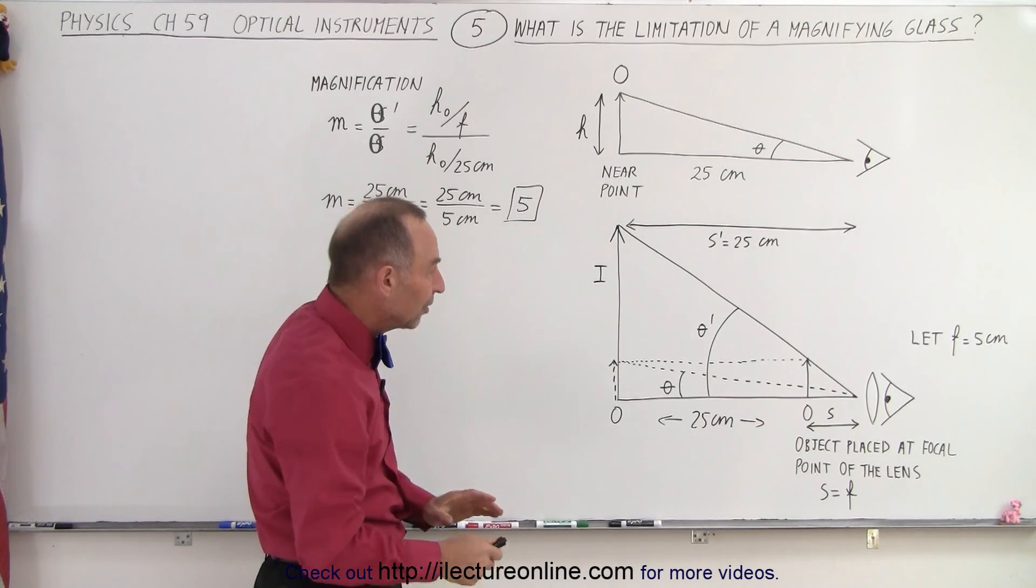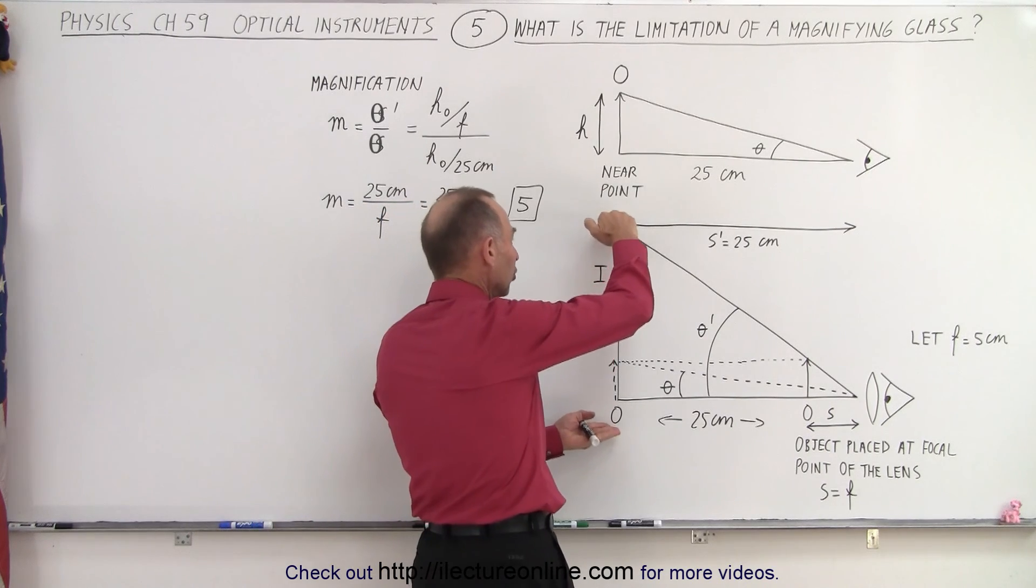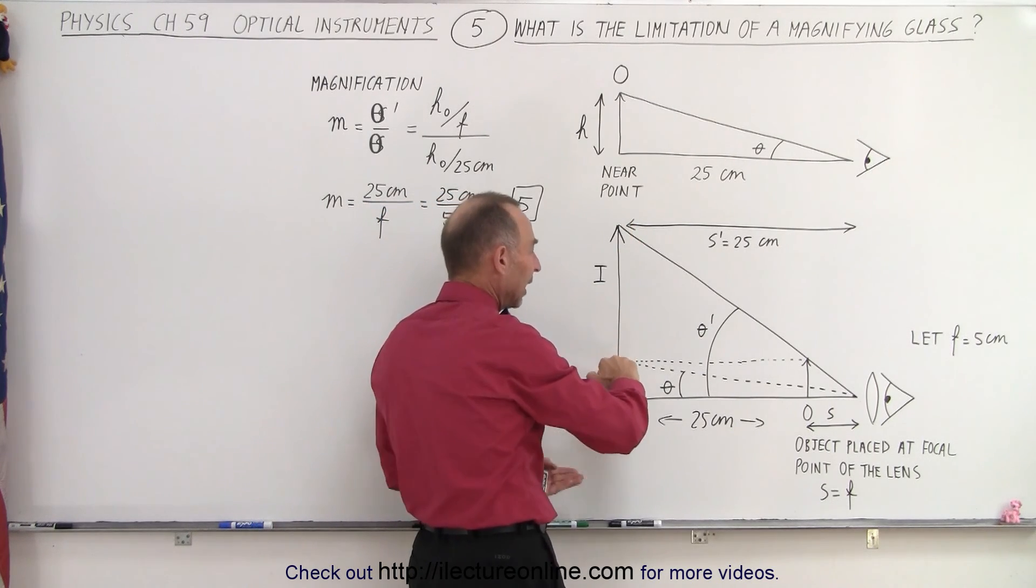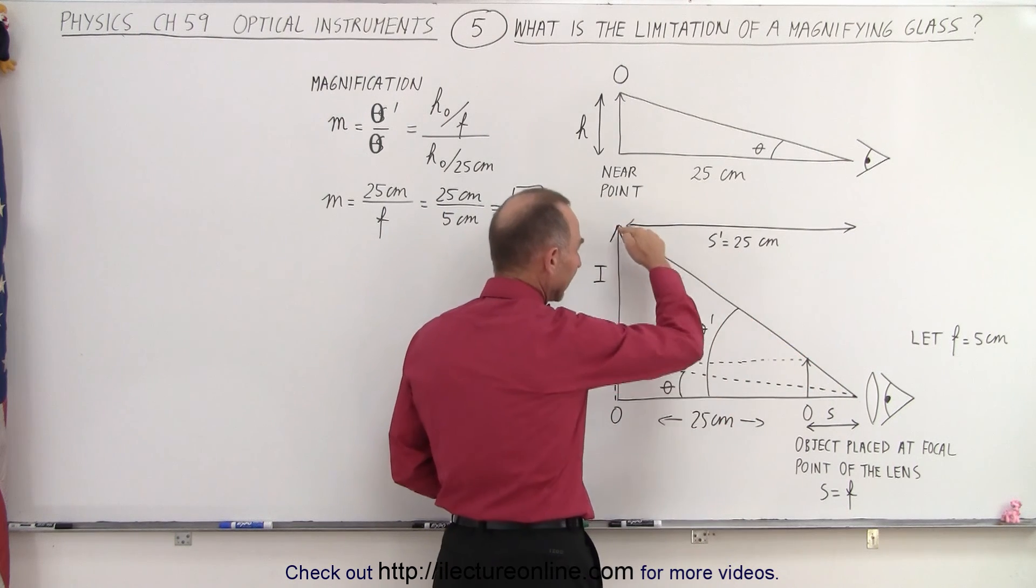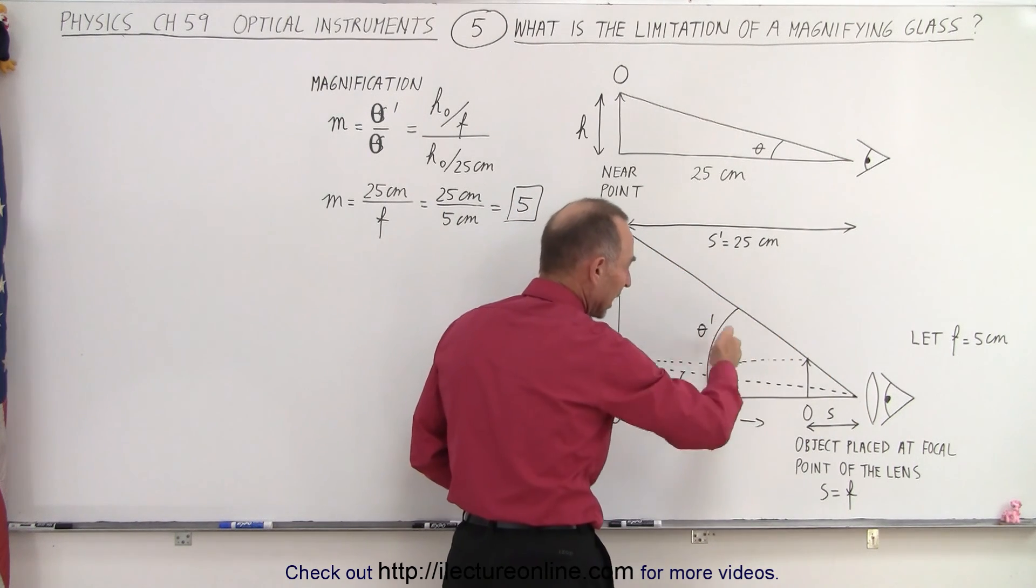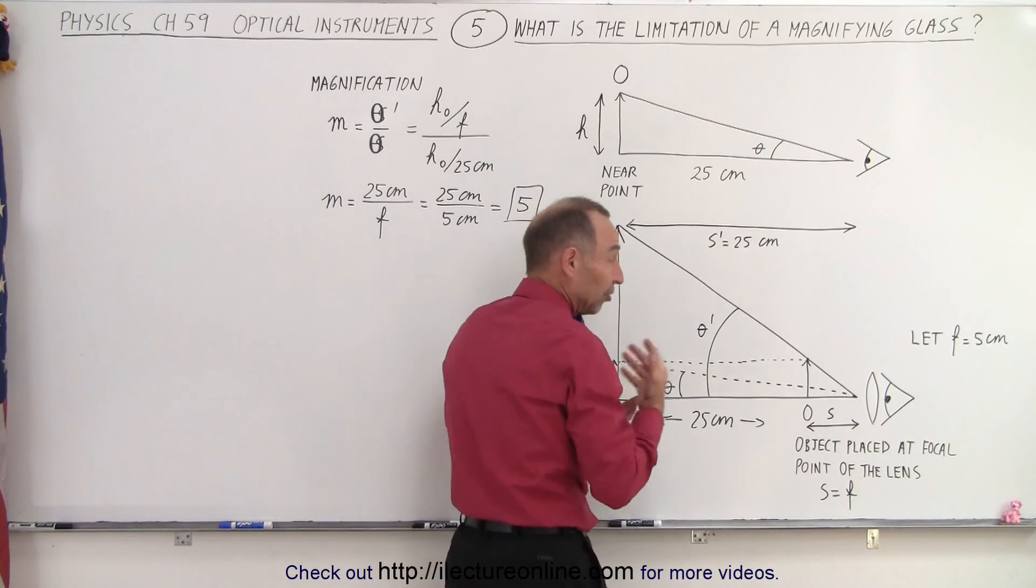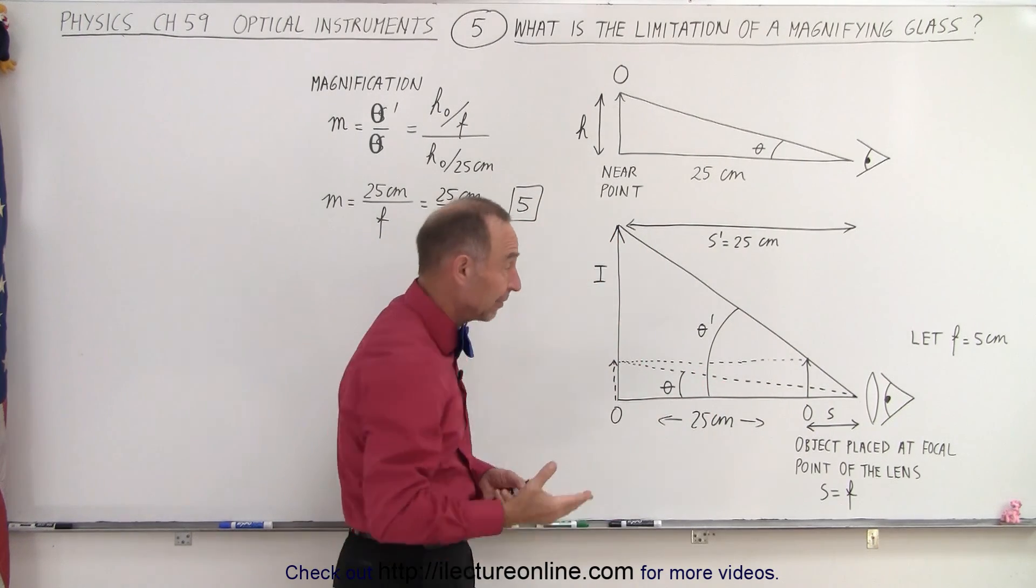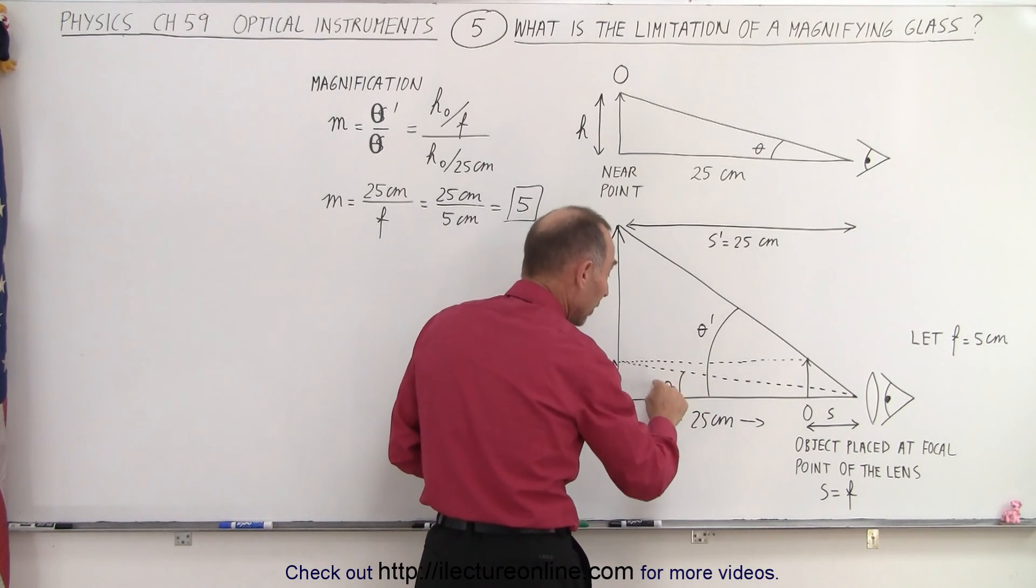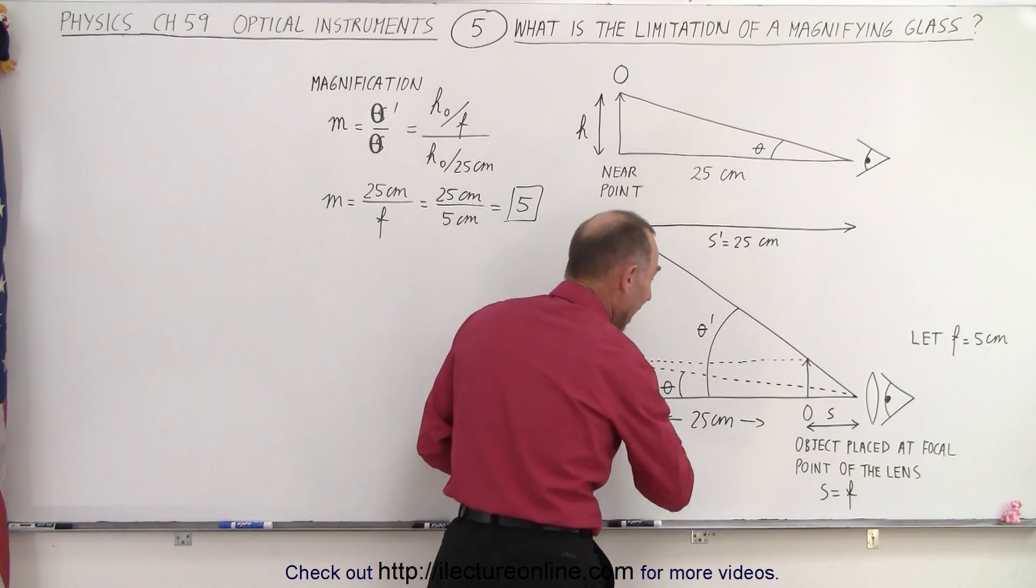Then you can see that the image is now much larger than the original object. And you can see that the angle that image subtends is much greater than the angle that the object would subtend if the object was placed there.